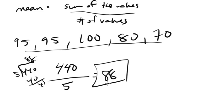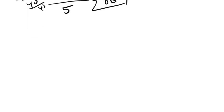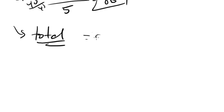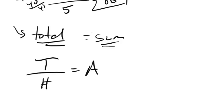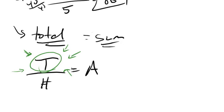Just like with the median, there can only be one average. Most SAT problems won't be that straightforward with averages — they might ask for a missing test score given an average, for example. The key is to look for the total, the sum of all the values. Remember the equation: total divided by number of values equals the average. If you can find the total, it will help you solve these problems quickly.